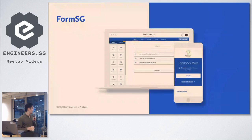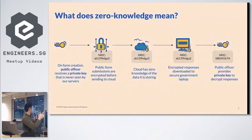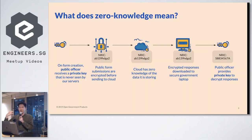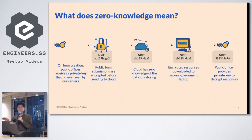This is kind of what the product looks like as mobile responsive. The key question is: what does zero-knowledge mean? When the public officer creates a form, it receives a private key that's never seen by our servers — it is generated in the browser of the public officer. The public officer safeguards this, but the public key is provided with the form. When a submission comes in, the public key is used to encrypt the data, invisible to the form filler, the citizen, before sending it to the cloud. The cloud has zero-knowledge of the data they're storing.